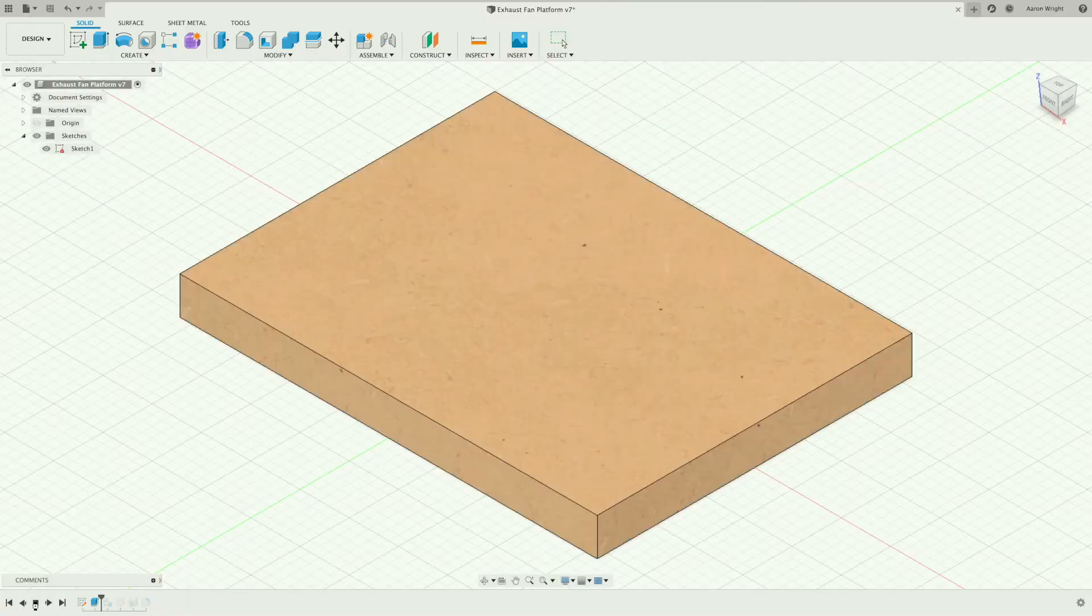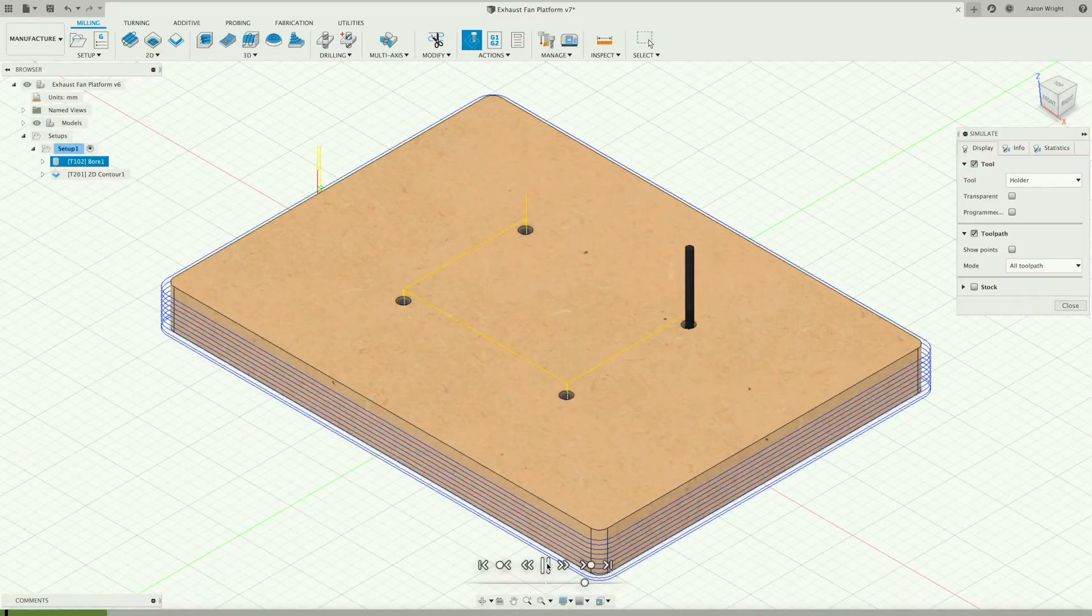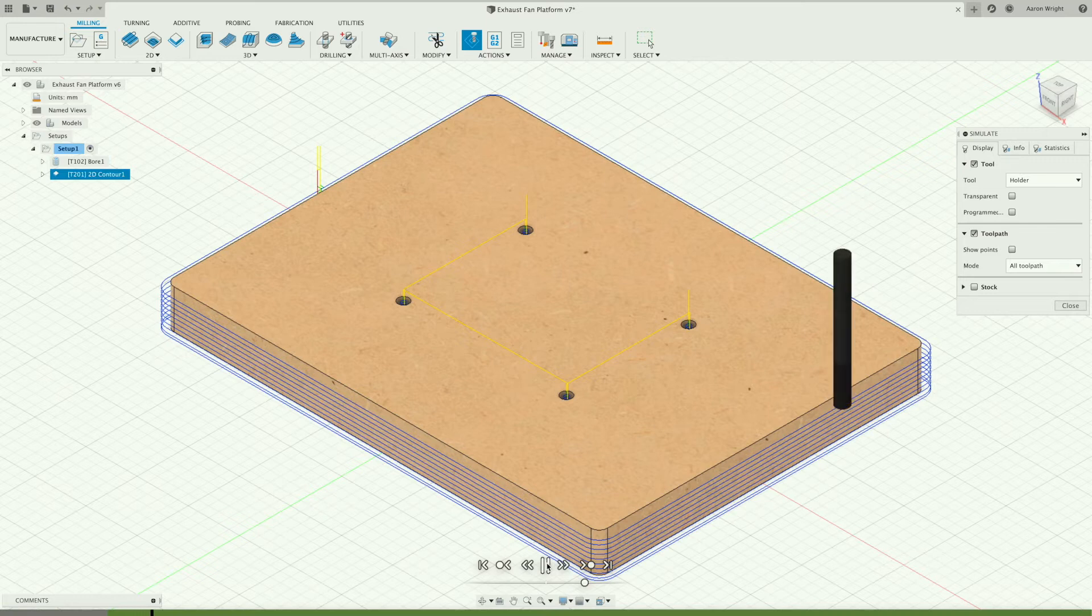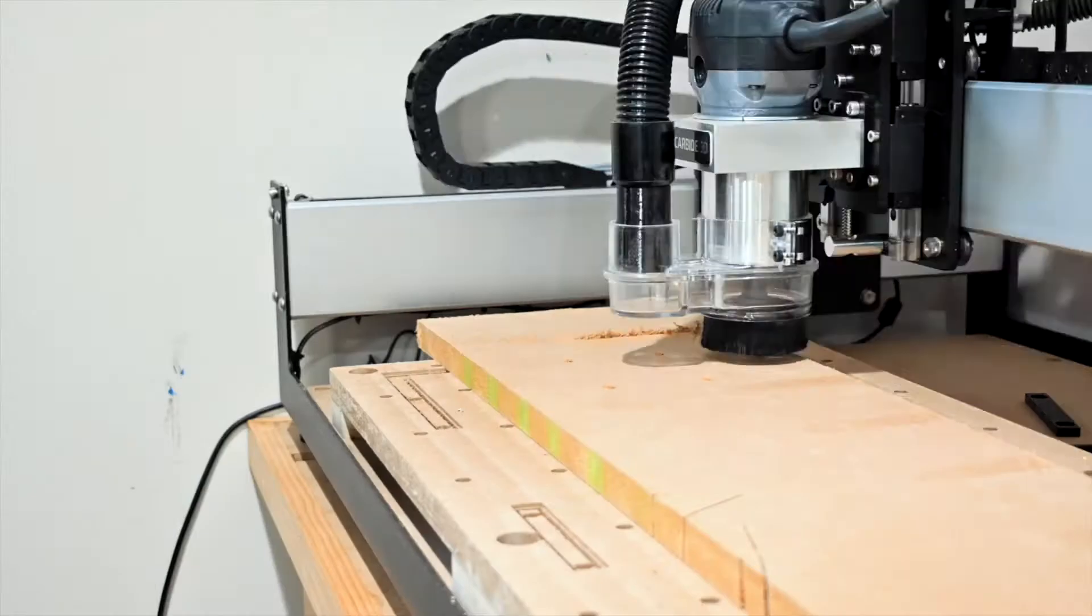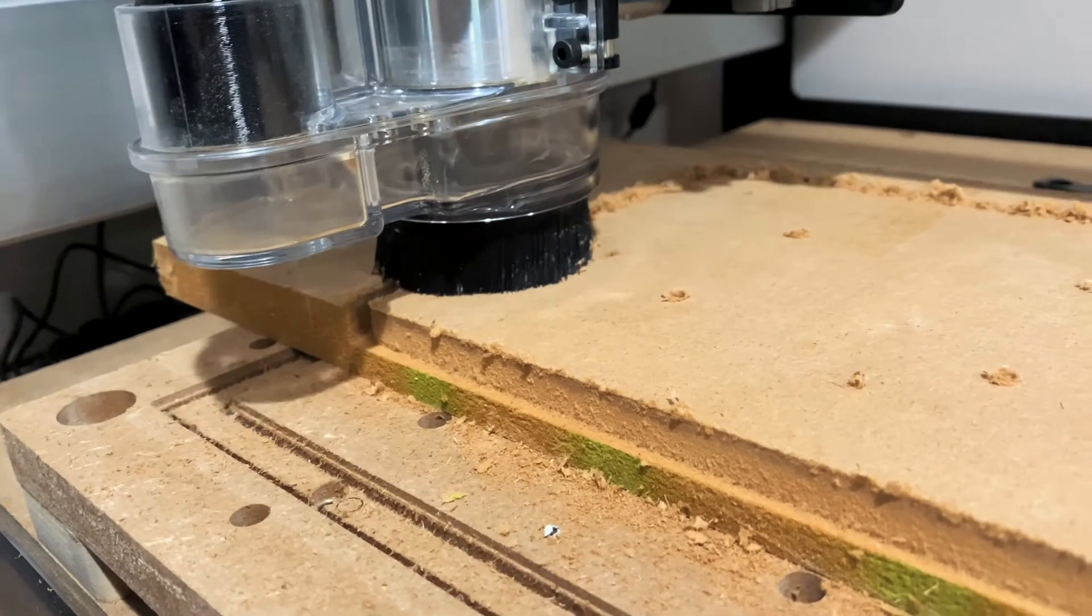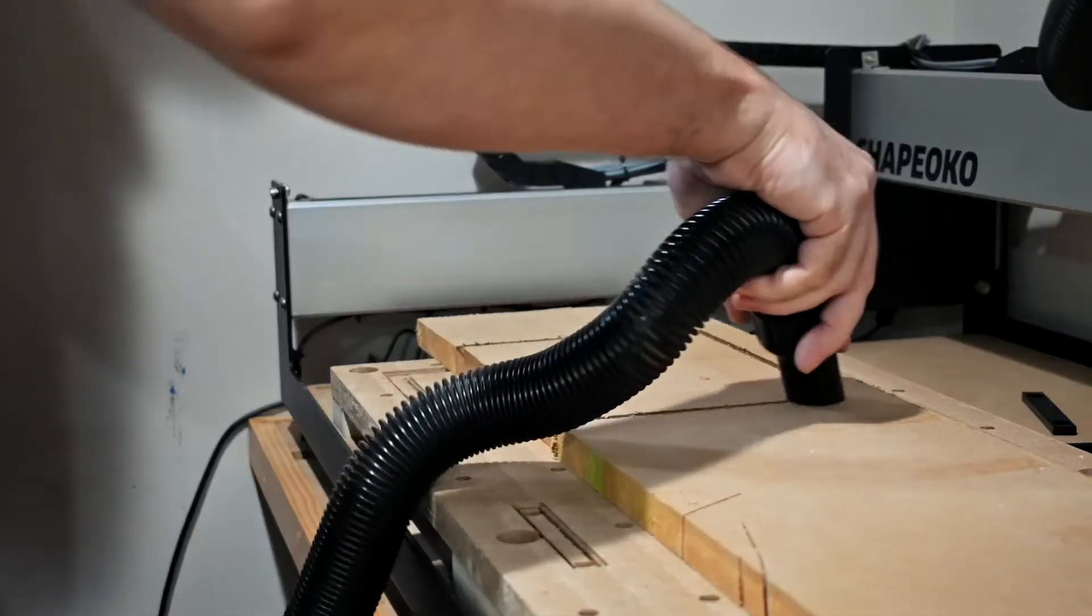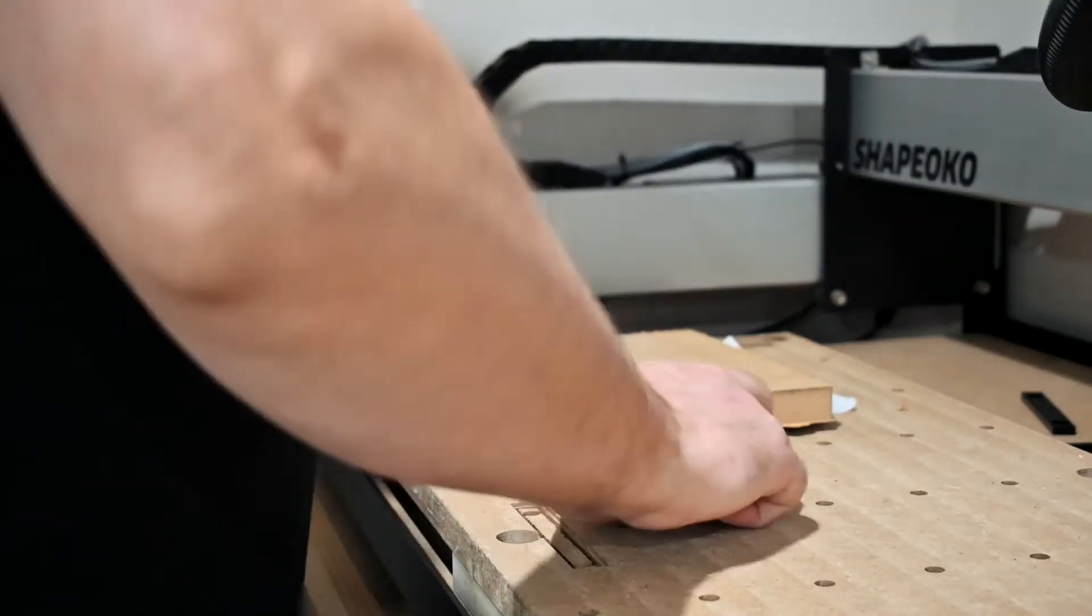The big fan will sit outside the cabinet on the floor. So I wanted to make a simple base. I knocked out a quick design in Fusion 360 before cutting the piece on the Shape Oko out of 3-4 inch MDF.